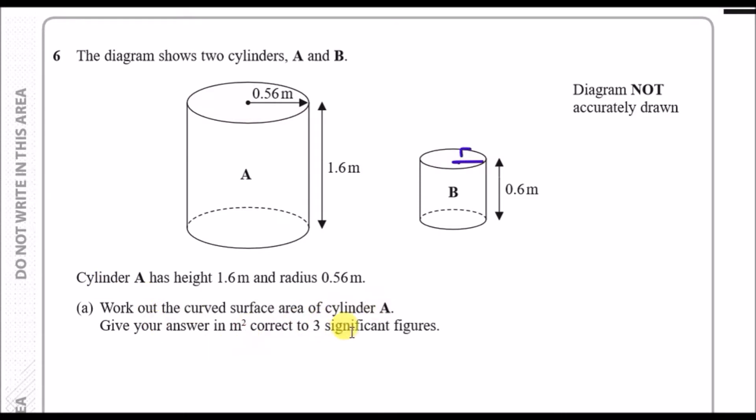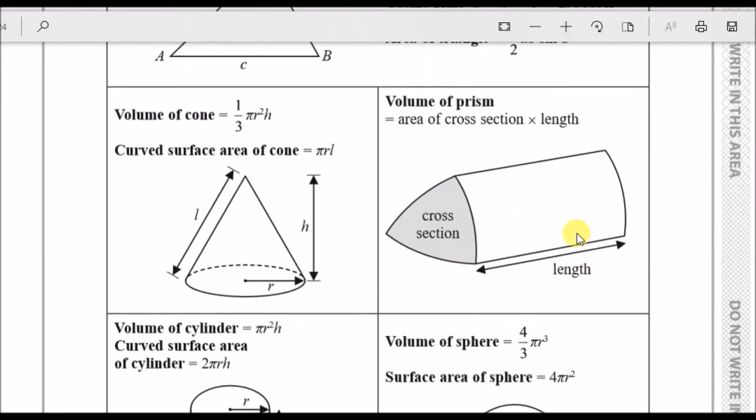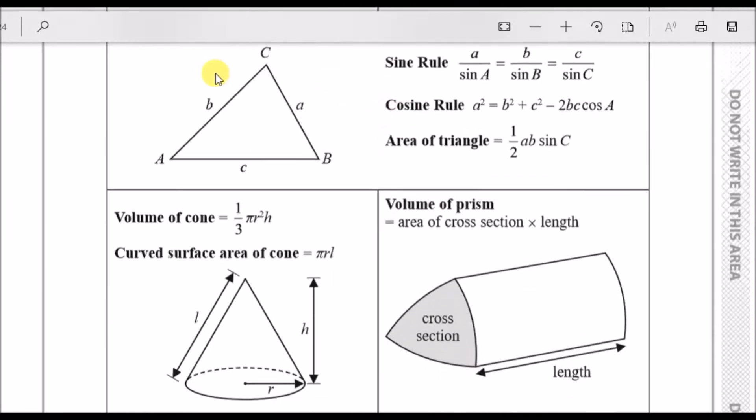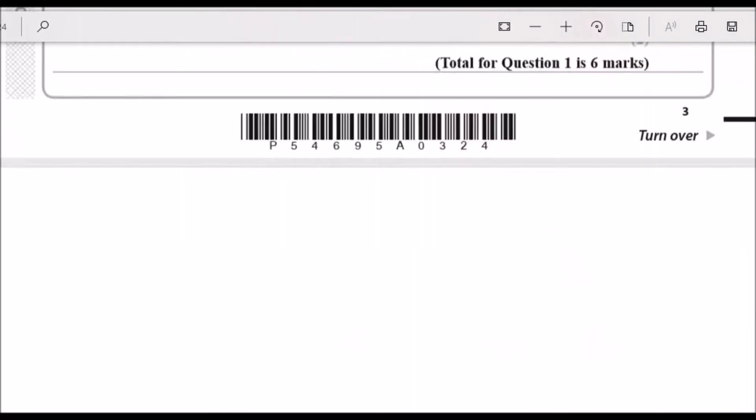To find the surface area, this is super easy because you're actually given a formula. Go straight back to the formula booklet at the top. When you come over here, you want to find the curved surface area of the cylinder, and here it is. The formula is 2π times the radius times the height.